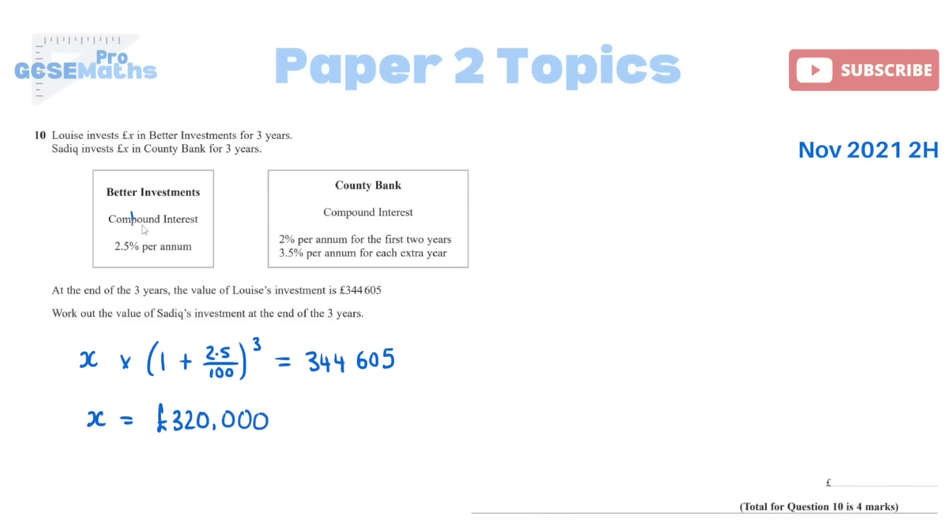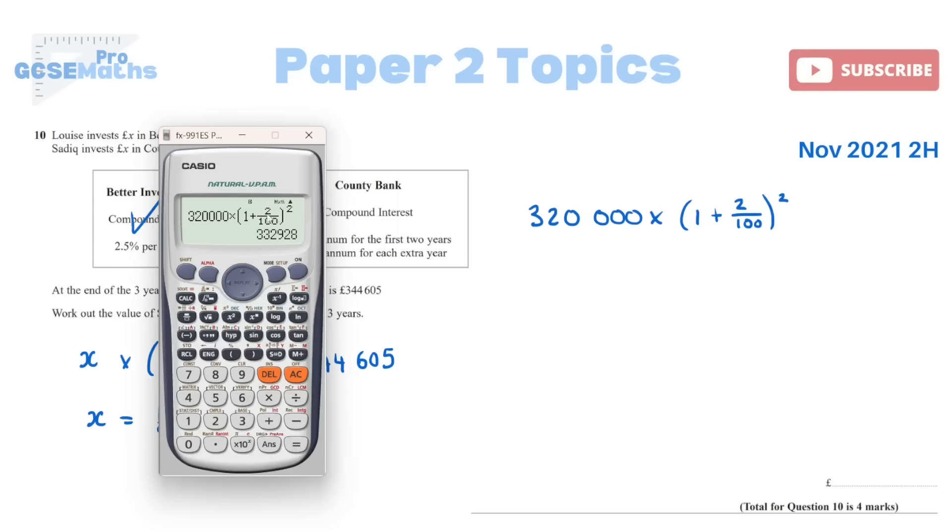So we're done with Louise now. Now we can look at Sadiq, because Sadiq also invested the same £320,000 into County Bank. For Sadiq, we just need to work it out as normal. You take your principal amount, which was the £320,000, multiply it by 1 plus the compound interest, which is 2% over 100. However, only for 2 years though. So after 2 years, Sadiq has £332,929.